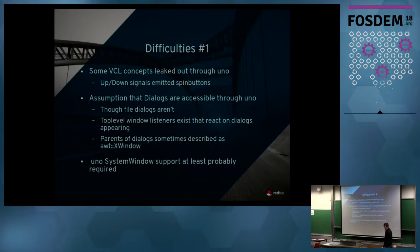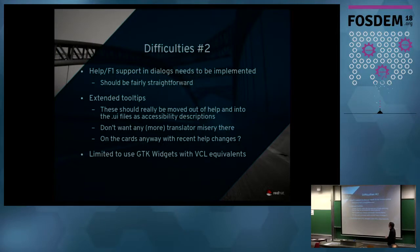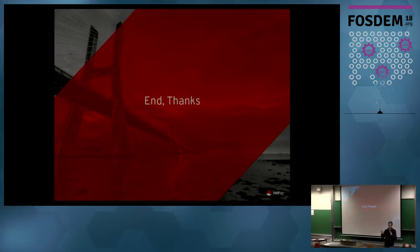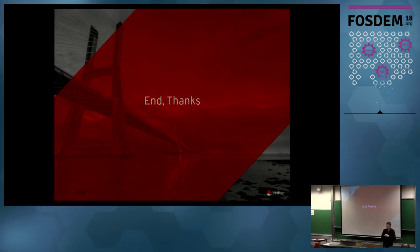There'll need to be some support to tunnel the dialogues through, and we probably need to move extended tooltip tips out of the help system and into the .ui files — something we've wanted to do for a while, though it means more work for translators. If we stick with the fallback model, we're limited to GTK widgets that have equivalents in our VCL widget set. We'd have to remain within that subset unless we went all the way to using GTK across all platforms and removing our toolkit entirely. For now, it's limited to what we already support.